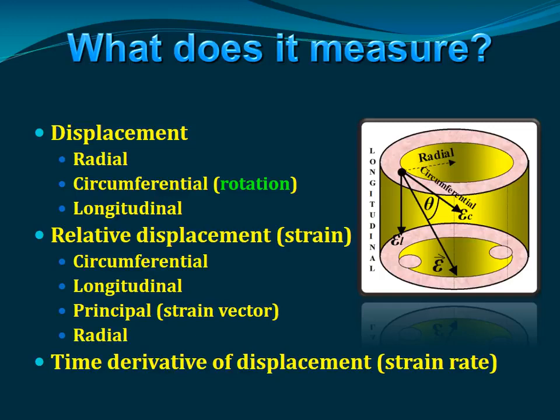The machine follows speckles of light and measures displacement. We can measure displacement in the radial direction — which is thickening — in the circumferential direction, which is rotation that changes from base to apex in both magnitude and direction, and longitudinal displacement. By taking two adjacent speckles and measuring the distance between them, we can measure strain. We can also calculate circumferential, longitudinal, and principal strain — the geometric average in the direction of actual sarcomer shortening — as well as radial strain and strain rate.